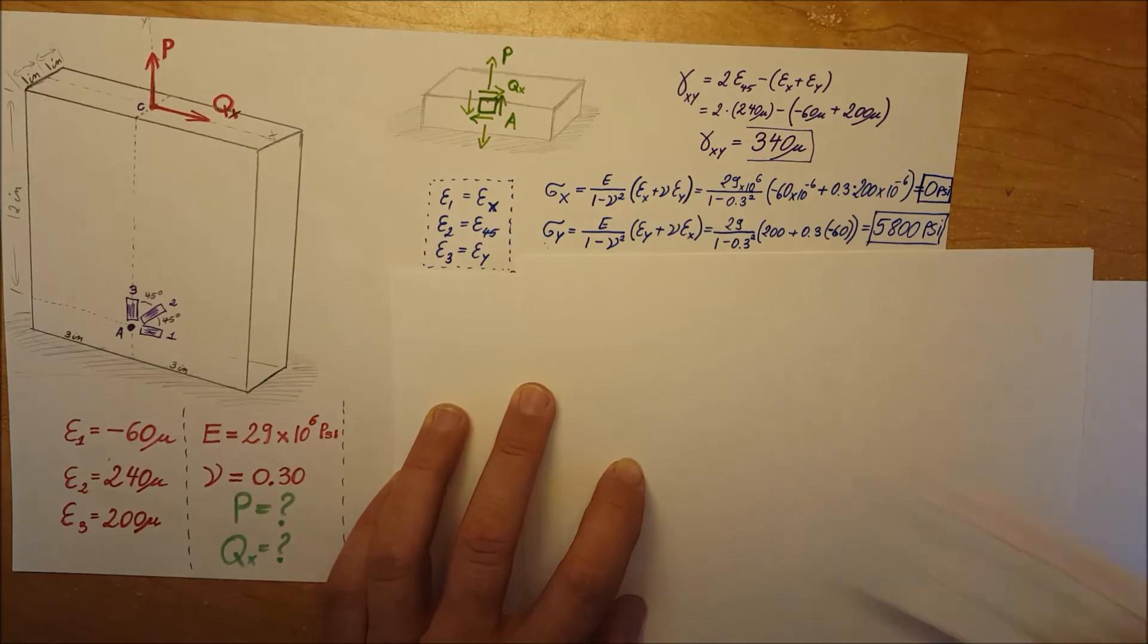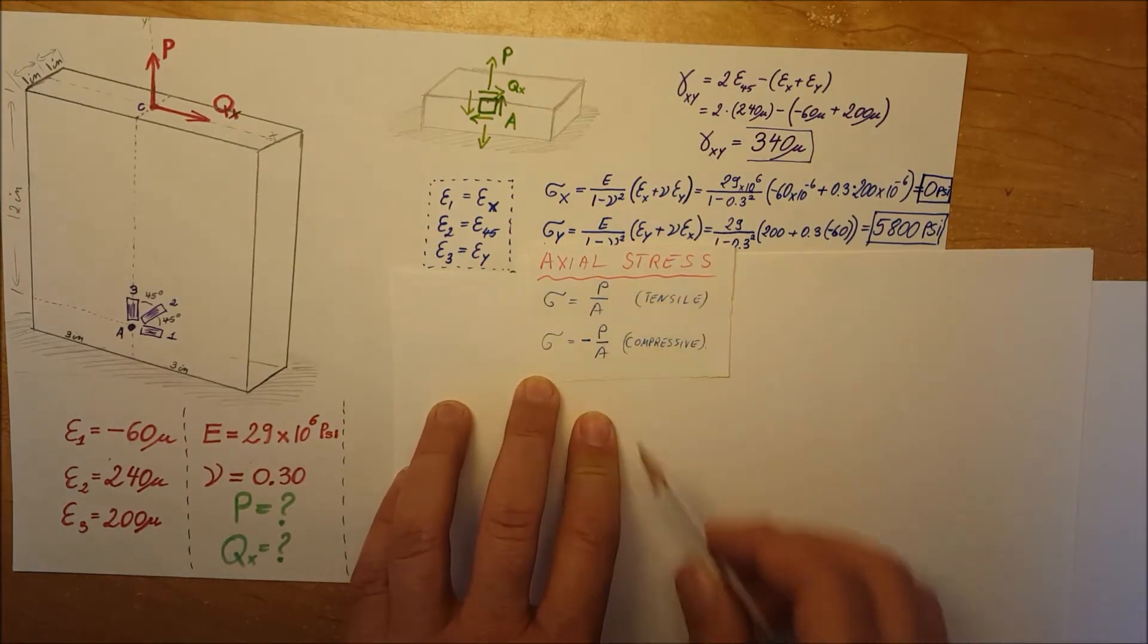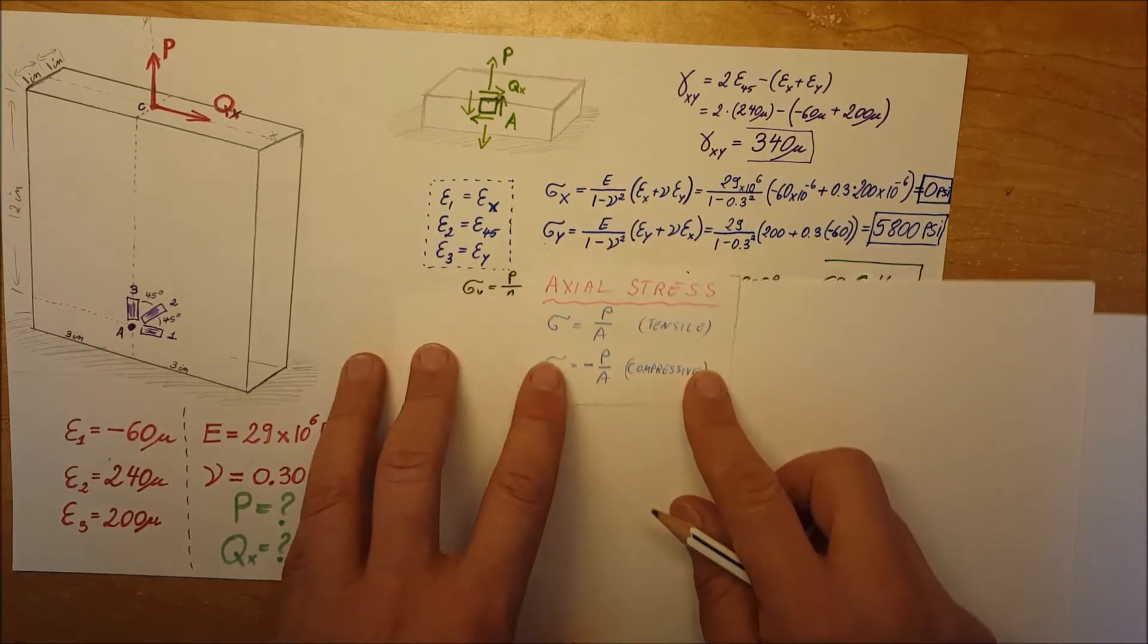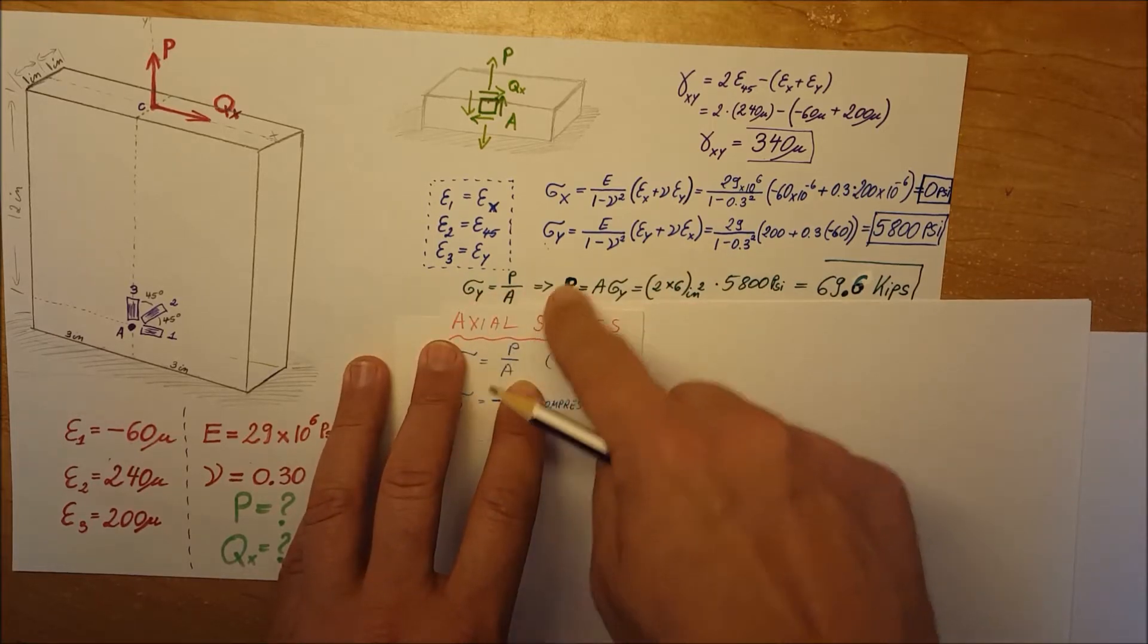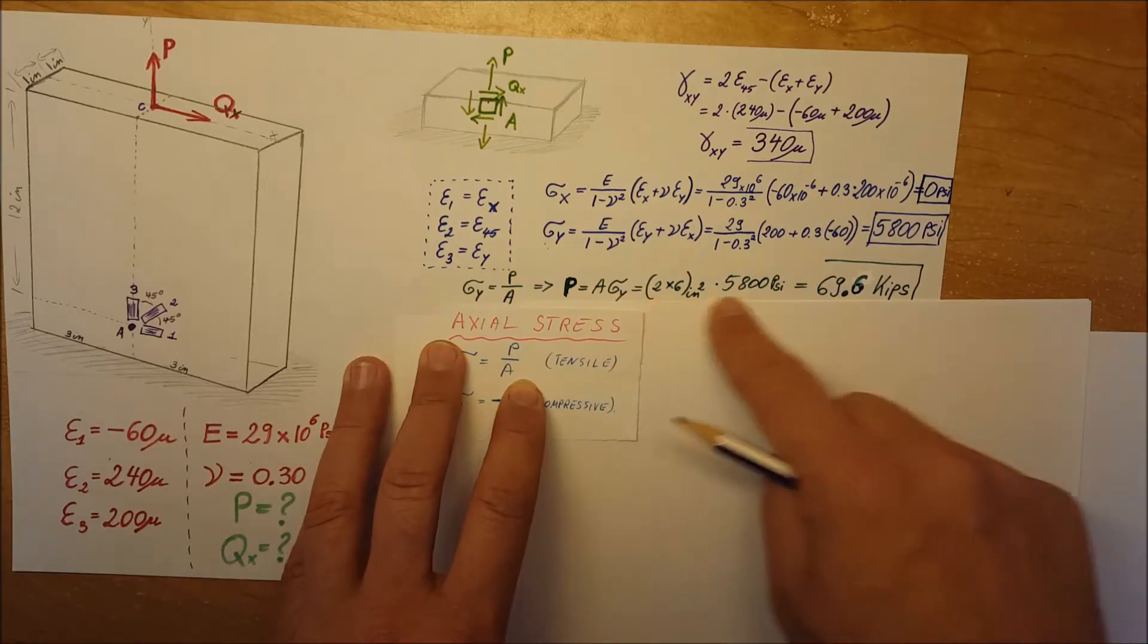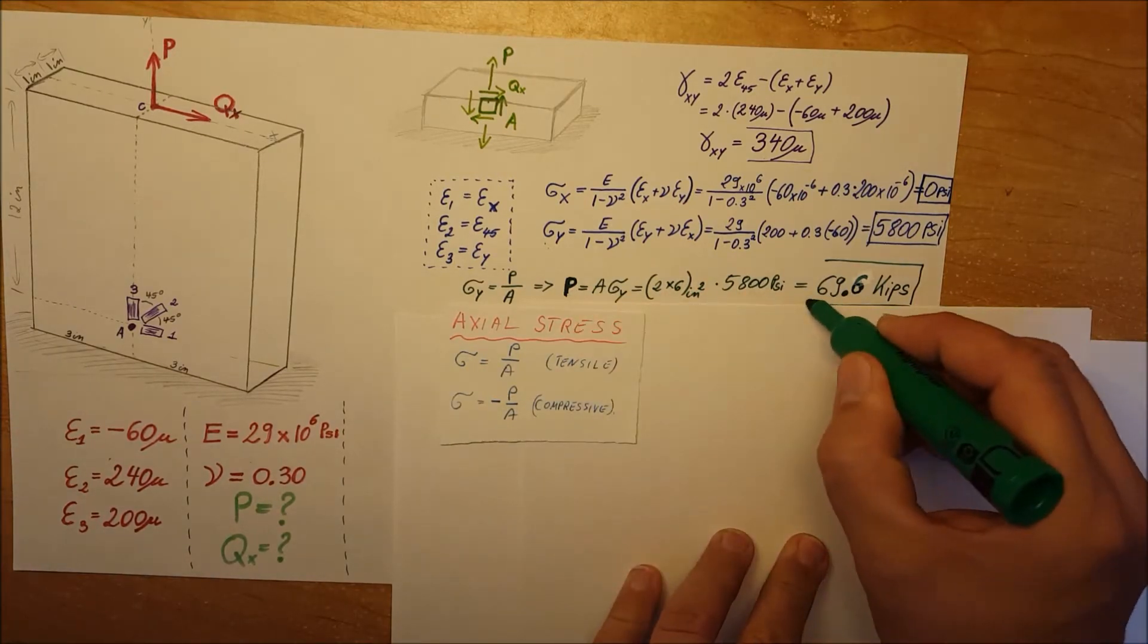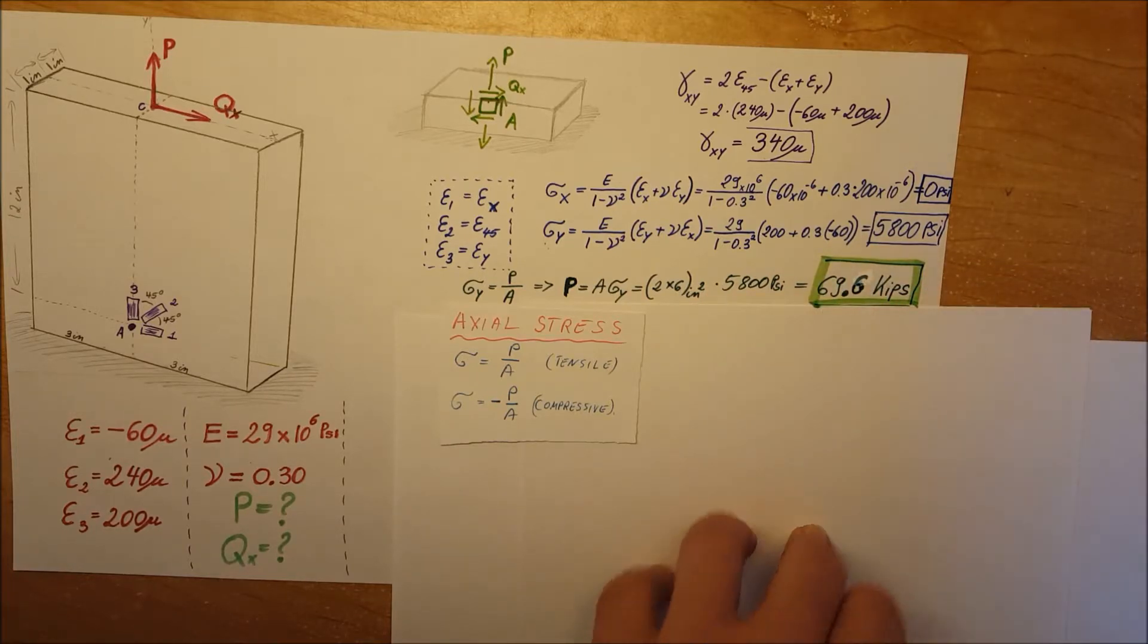P is an axial force, therefore we have axial stress: σ equals P over A, force over area. We can use this to solve for P. Area times stress, plug in our values, and we find our first answer for the value of P, which is 69.6 kips.